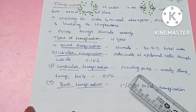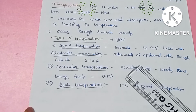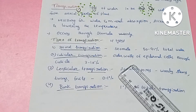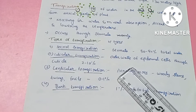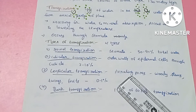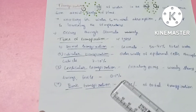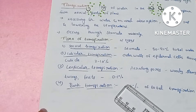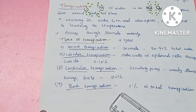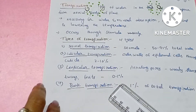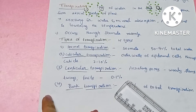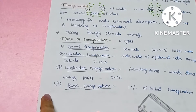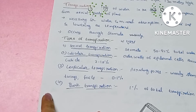Lenticular transpiration occurs through lenticels, which are aerating pore structures found in cork, woody stems, and twigs and fruits. Lenticular transpiration accounts for nearly 0.1% of water loss. Bark transpiration accounts for about 1% of water loss.